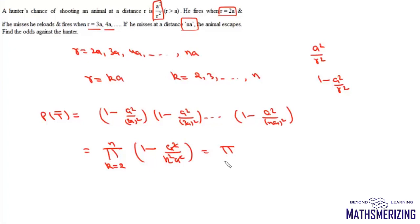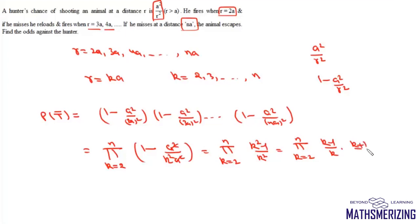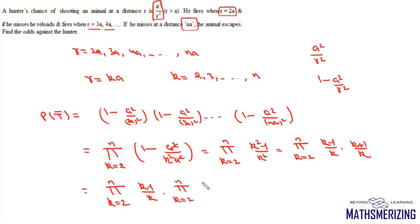So we write this probability as the product from k=2 to n of (k²-1)/k². We can factor this as (k-1)/k · (k+1)/k, and split the product into two parts: the product of (k-1)/k from k=2 to n, multiplied by the product of (k+1)/k from k=2 to n.